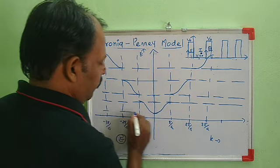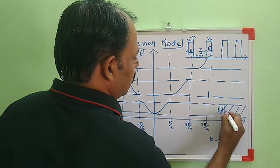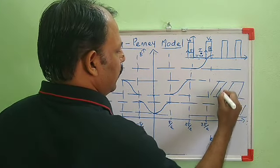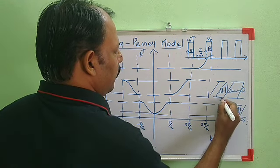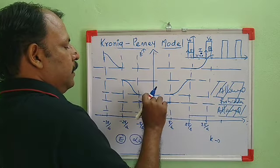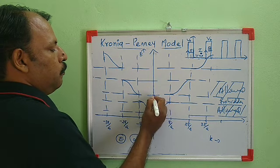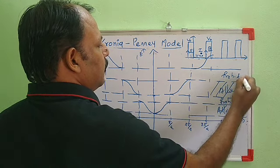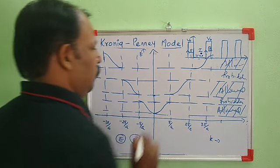The resulting E vs k plot shows alternating allowed and forbidden energy regions. The allowed energy levels appear in bands, separated by forbidden energy gaps where no wave-function solution exists. So there is an allowed band, then a forbidden gap (energy gap), then another allowed band, another forbidden gap, and so on.